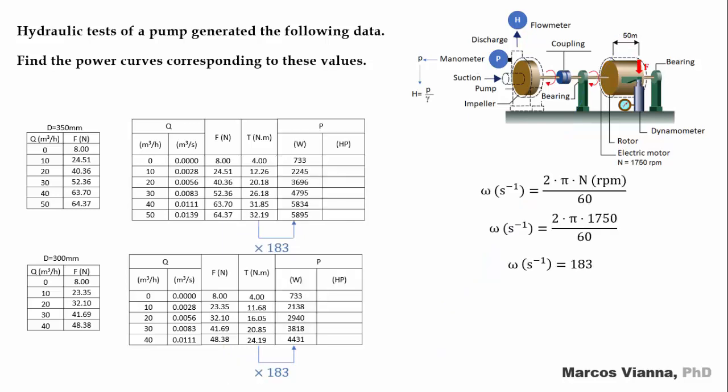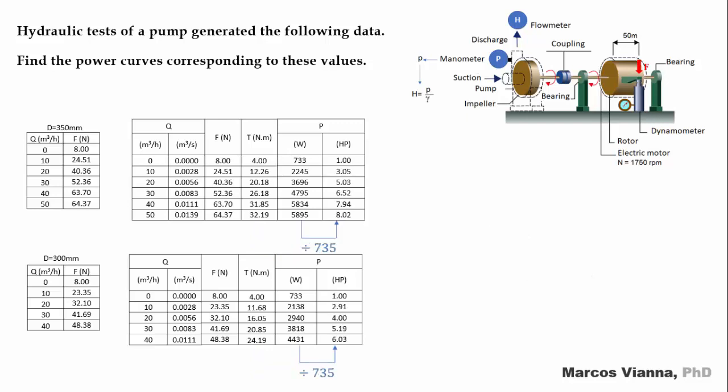Now, to find the values of the powers, we just multiply each torque by 183. That is the value of the angular velocity expressed in radians per second. See how we made the conversion from RPM to radians per second. We know that 1 Watt divided by 735 converts the power to HP. So, let's do it.